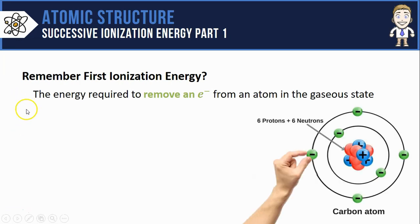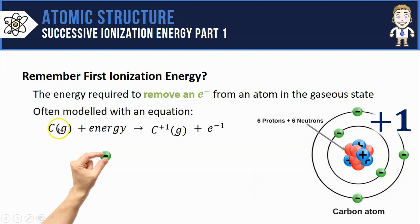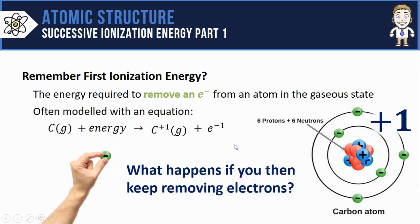We can model that with this carbon atom by removing an outermost electron, turning it to a plus one cation and measuring the amount of energy it took to remove that electron. To save time we often model this process with an equation that shows the original atom, in this case carbon, the energy required to remove the electron, the atom changes to a plus one cation, and the electron that has been separated and removed.